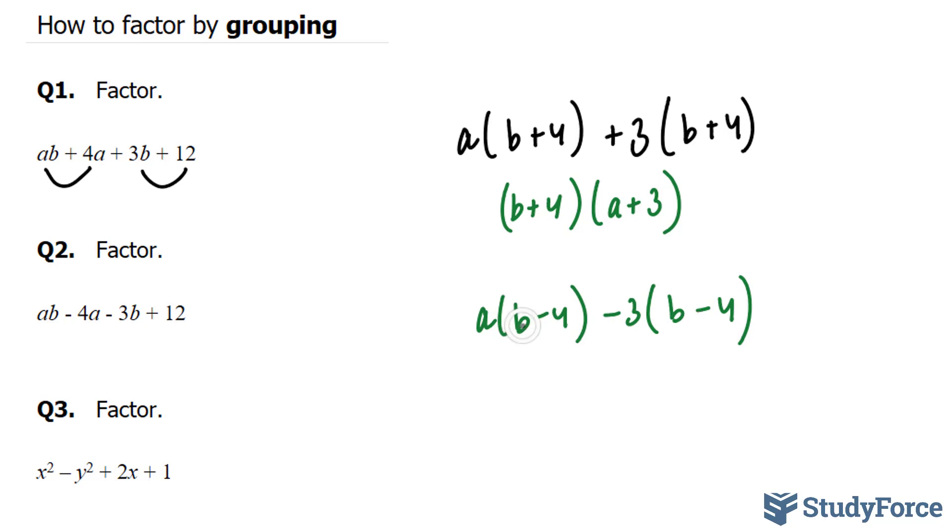This time, I'm going to factor out a B minus 4, leaving me with simply A minus 3. And that is your final answer.